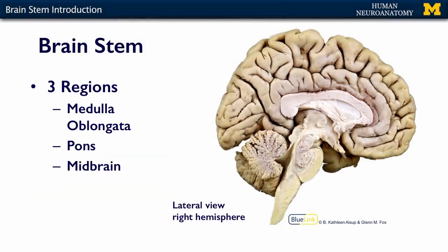There are three regions in the brainstem to know. First is the medulla oblongata — once you get to know it better you'll just call it the medulla for short. There is the pons, and then up above that is the midbrain.